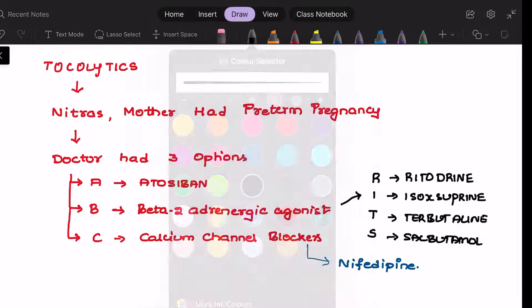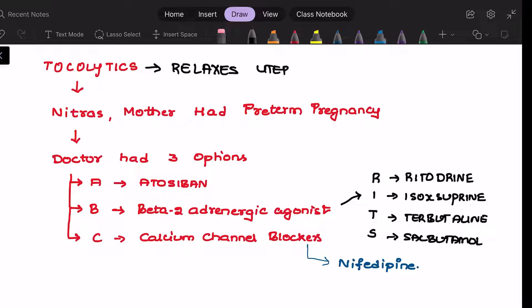Tocolytics are the ones which relax the uterine smooth muscles. Basically they are used to prevent premature labor.